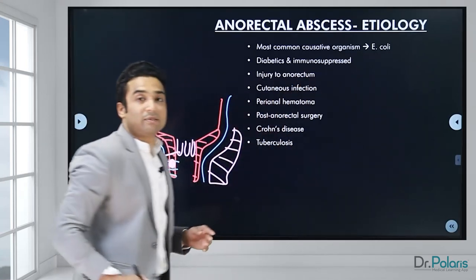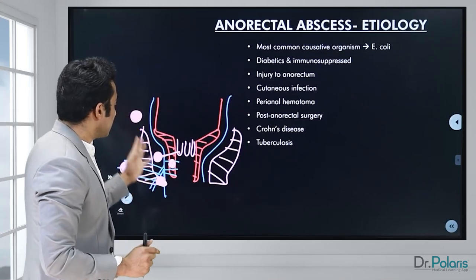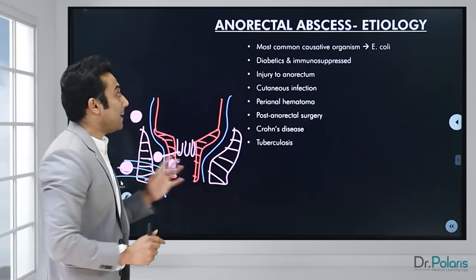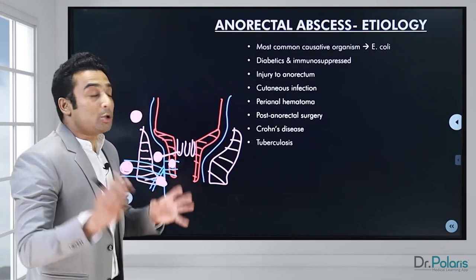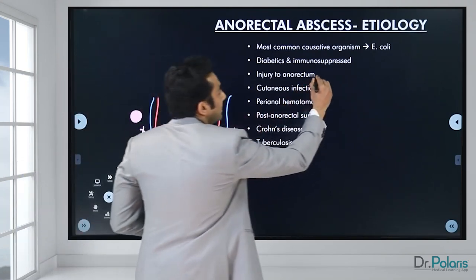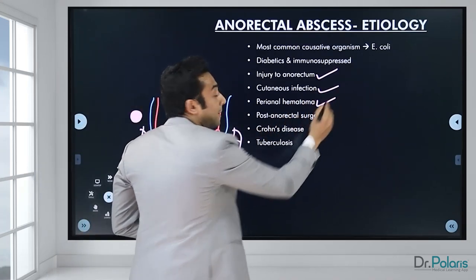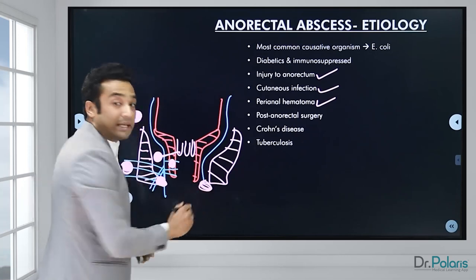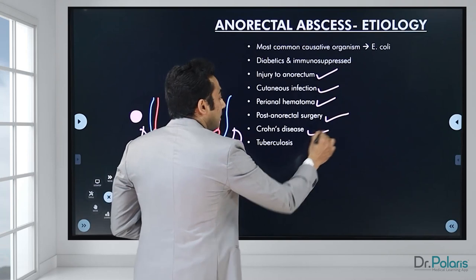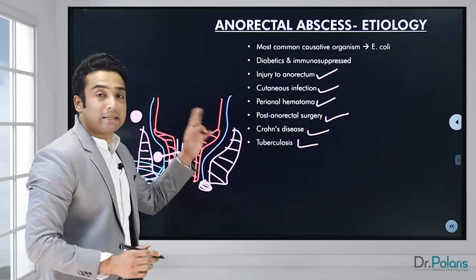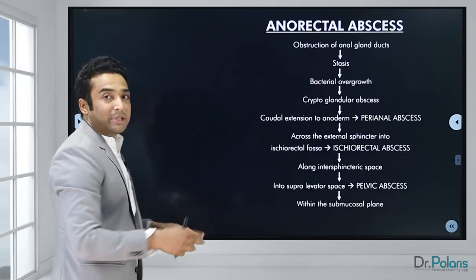The most common organism found in perianal, ischiorectal, submucous, and pelvic abscesses is E. coli. It is commonly seen in diabetics and immunosuppressed patients. It usually occurs with injury to the anorectal region, cutaneous skin infections, infected perianal hematoma, surgeries, and inflammatory bowel diseases like Crohn's, as well as tuberculosis. These are the causes of anorectal abscesses.